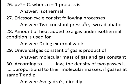Twenty-seventh question: Ericsson cycle consists of — answer: two constant pressure processes and two adiabatic processes. Friends, remember all the processes that make up cycles like Ericsson, Joule, Stirling, Carnot, Otto, Diesel, and so on — this is a very important area from which exam questions are asked.